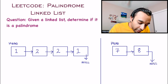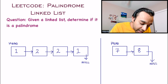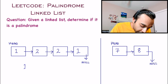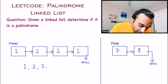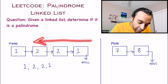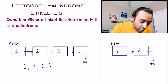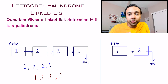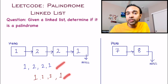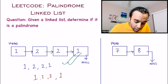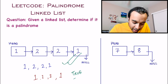Let us look at our first sample test case. If you try to read this linked list from the head, you get 1, 2, 2, and then 1 again. Similarly, if you read this list from the backwards direction, you also get 1, 2, 2, and then 1. Both of these sequences are the same, and hence this linked list is a palindrome. In this case, you need to return true as your answer.